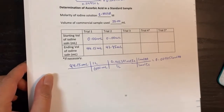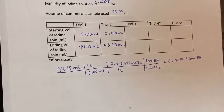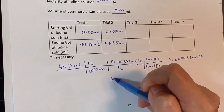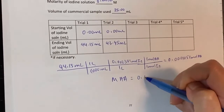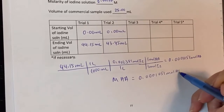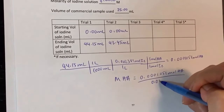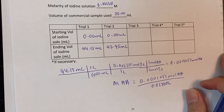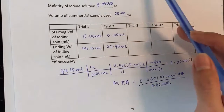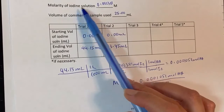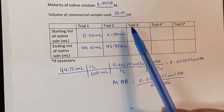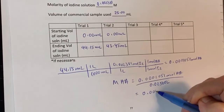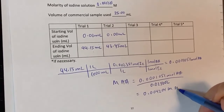Once you have the moles of ascorbic acid, divide by the volume of apple juice in liters: 0.0001051 moles divided by 0.02500 L. Remember: match the molarity of the sample to the volume of the sample — don't mix iodine volume with apple juice molarity. That gives 0.004204 M as the molarity of ascorbic acid in the apple juice.